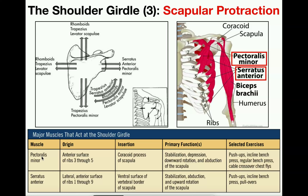Looking at these two muscles: the pectoralis minor originates on the anterior surface of ribs three through five and inserts on the coracoid process of the scapula. Remember, we're always pulling the insertion toward the origin. If you pull that insertion toward the origin on the ribs, that's going to cause the scapula to move away from the midline.